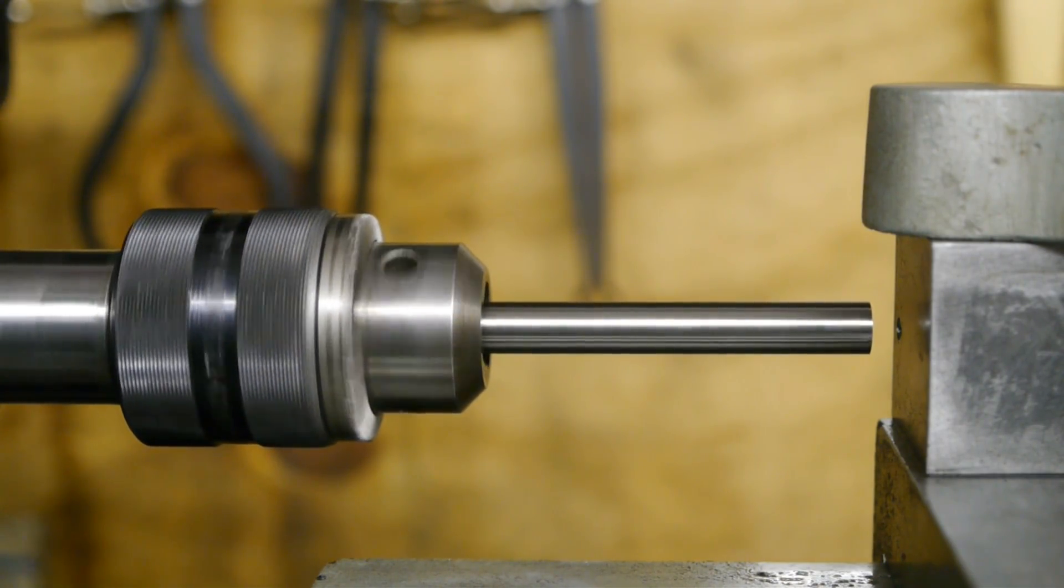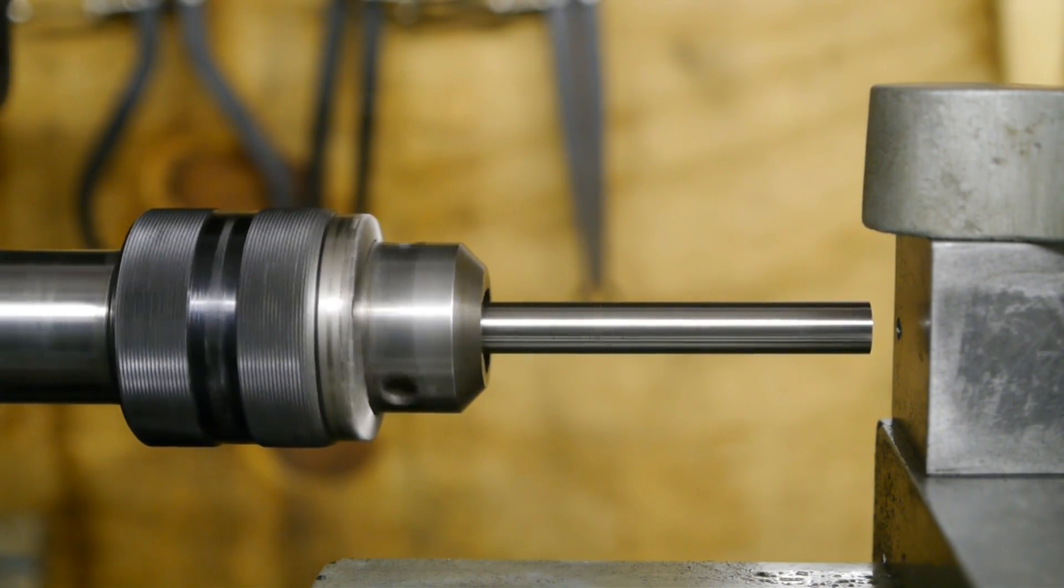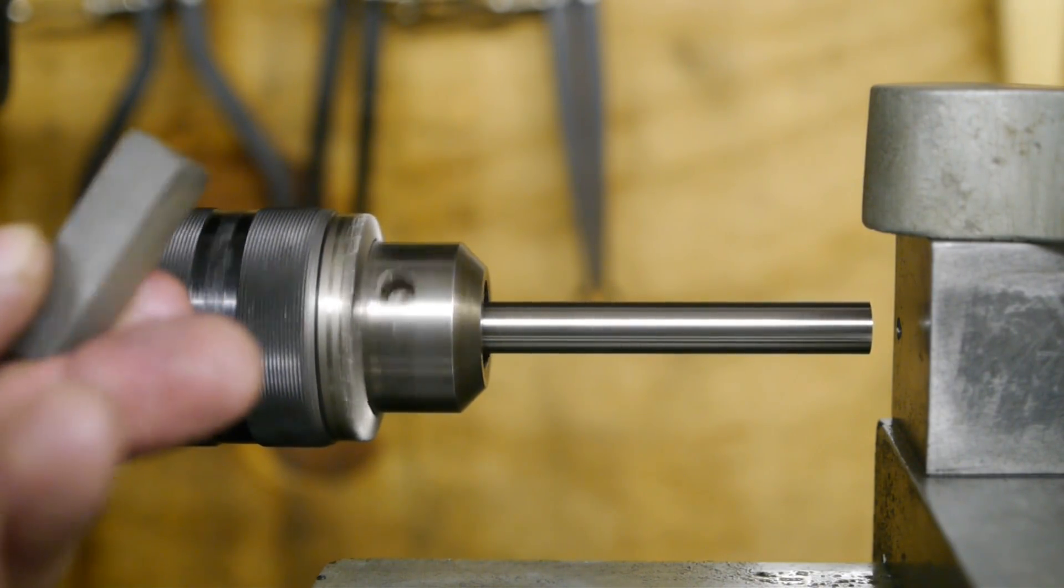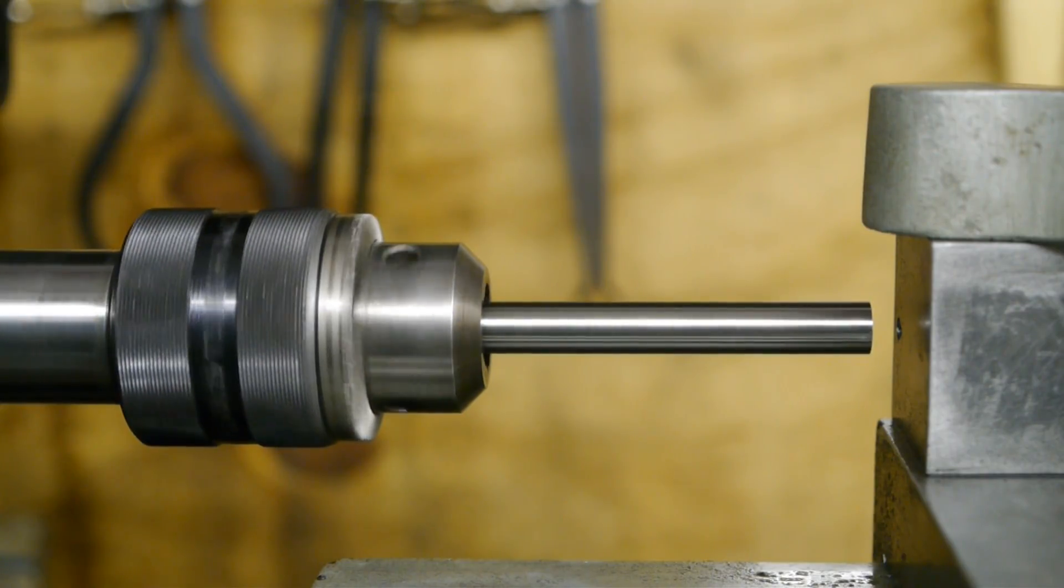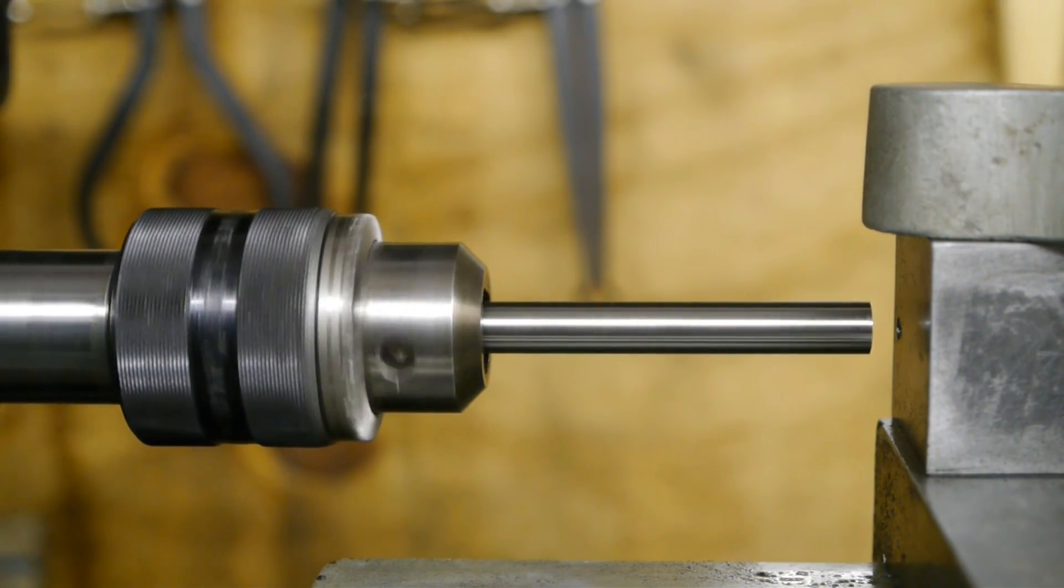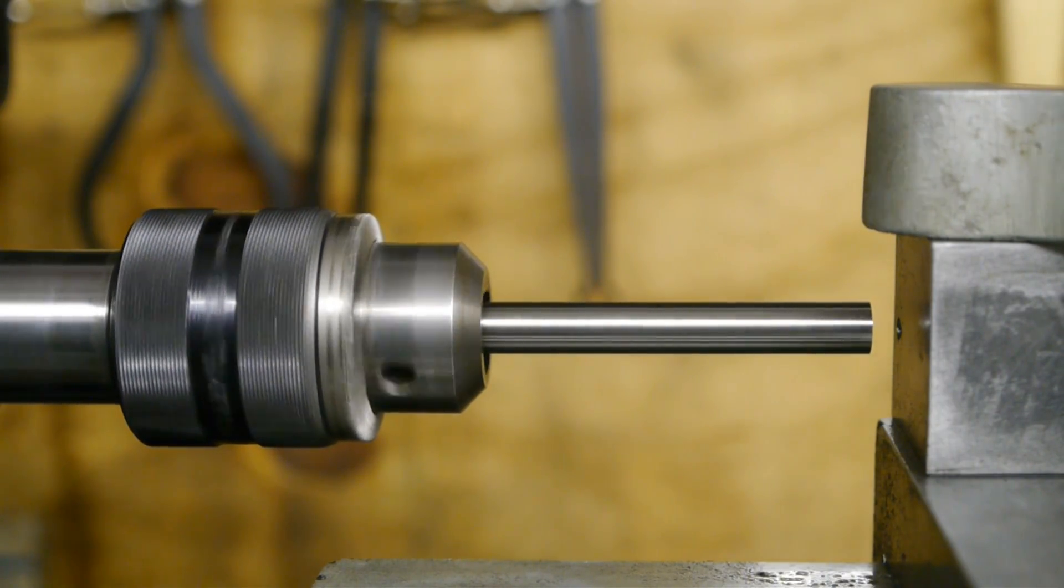At first the runout was 20 hundredths of a millimeter, but after stoning the register with this hard Arkansas stone it got a lot better. So now I can finally continue with my boring bar holder project.